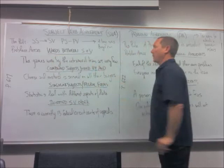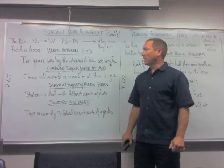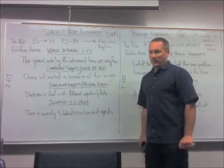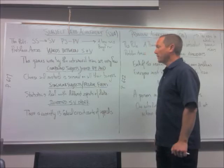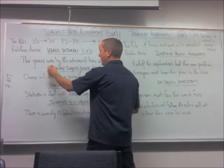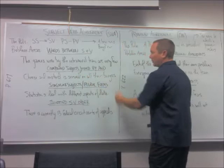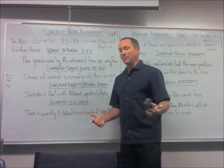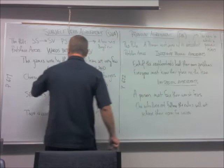Another common situation that can create subject-verb disagreement comes from compound subjects joined by and. You take two singular nouns — cheese and mustard — put them together and you have a compound subject. 'Cheese and mustard is served on all their burgers' is incorrect, because we now have more than one subject, so the singular verb no longer works. The correct form is: 'Cheese and mustard are served on all their burgers.'